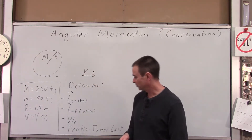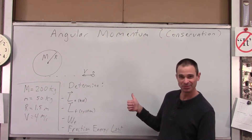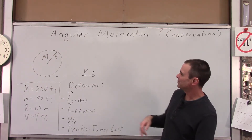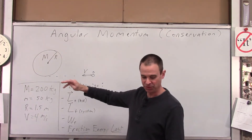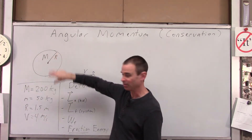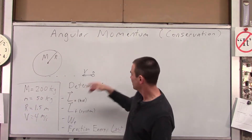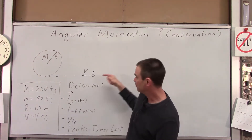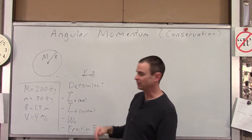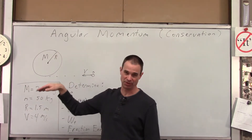Here's the situation. We've got a merry-go-round, and we're looking at this from a bird's-eye view — as if we're in a helicopter looking down onto it. The merry-go-round has mass big M and radius R. A kid of mass little m is running tangent to the edge of the merry-go-round, and the kid is going to jump on. The merry-go-round will then begin to rotate.